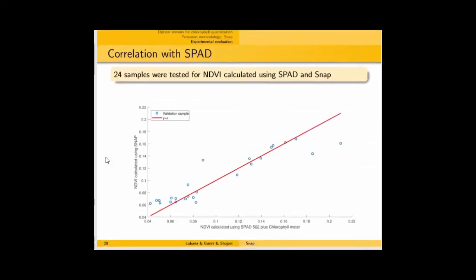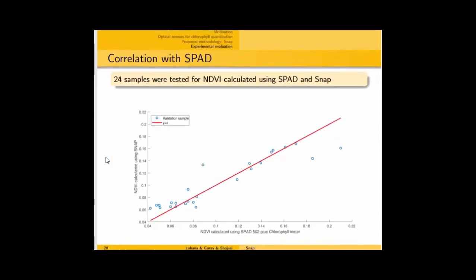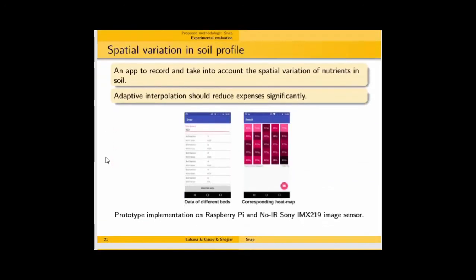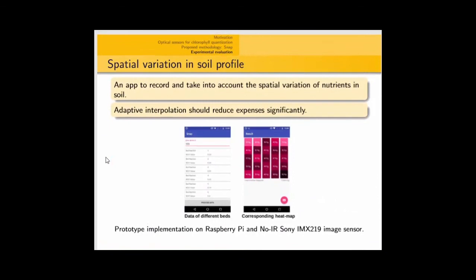The same has been shown here. Most of the samples, the parameter calculated using our device and SPAD are essentially the same. This is the Y equal to X axis. We can also account for spatial variation for the model device is pretty handy. You can take it from one patch to other patch directly. And we have also released an app, which can be used for designing a heat map to determine fertilizer requirements from soil bed to soil bed.